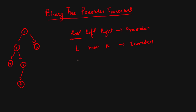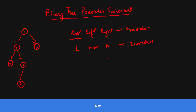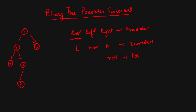In post-order, our root will be printed last. Also, the left subtree is always printed before its right subtree. Now let's understand how we can solve pre-order traversal.